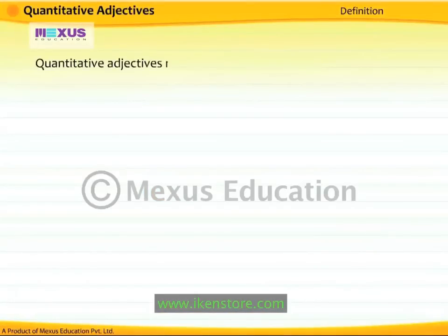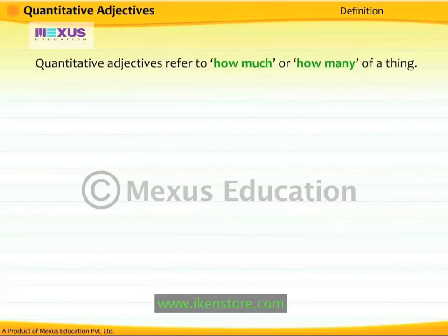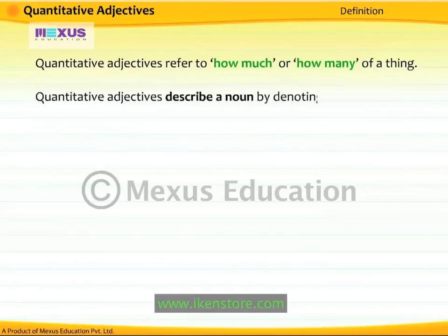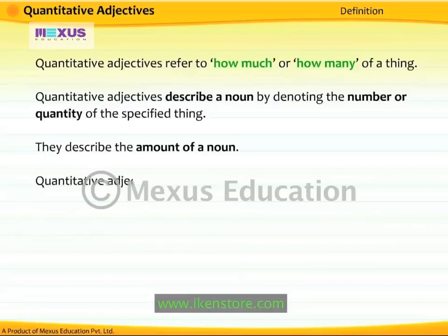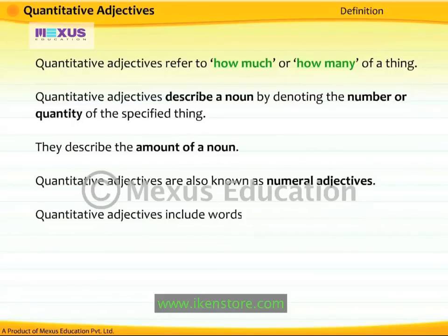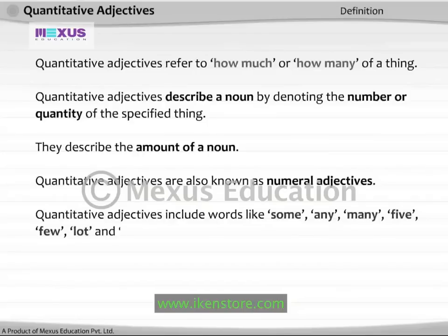Quantitative adjectives refer to how much or how many of a thing. They describe a noun by denoting the number or quantity of the specified thing — that is, the amount of a noun. Quantitative adjectives are also known as numeral adjectives. They include words like some, any, many, five, few, lot, and several.